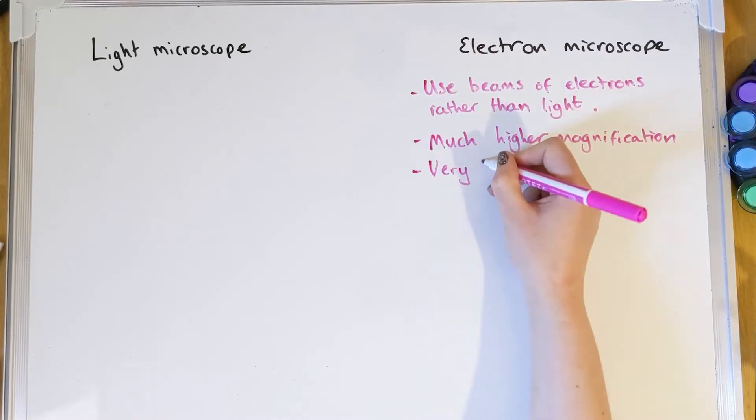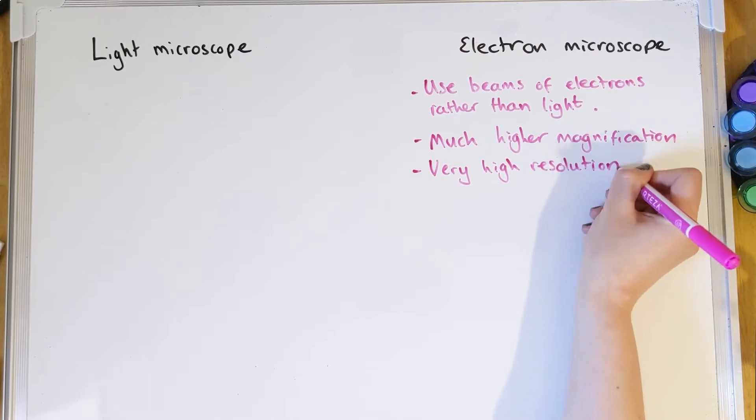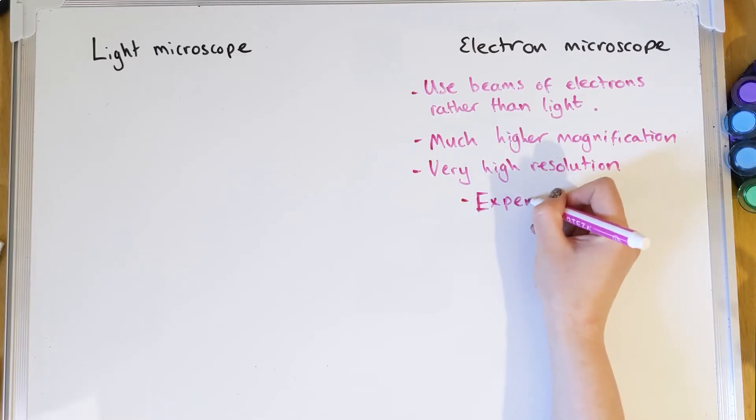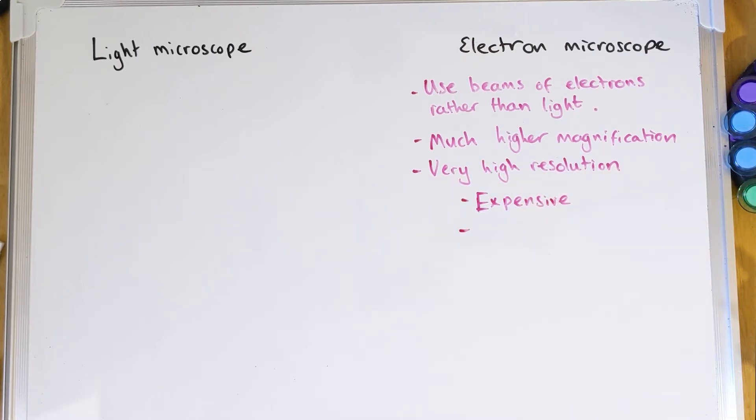You get really clear, very sharp images with electron microscopes. However, being so fancy, they are really expensive. You also need to use them in a vacuum — all air is removed so the electron beam gets no interference. This means you can't look at anything living; you have to kill and completely dry out the specimen first.